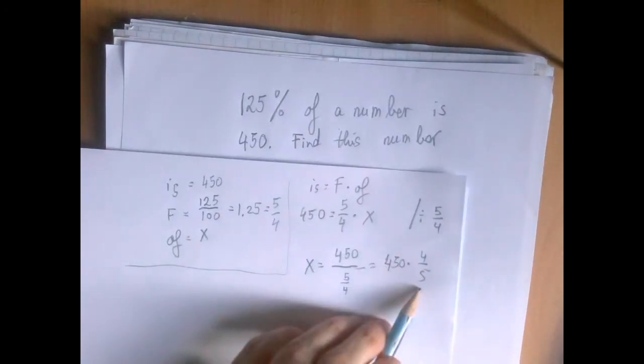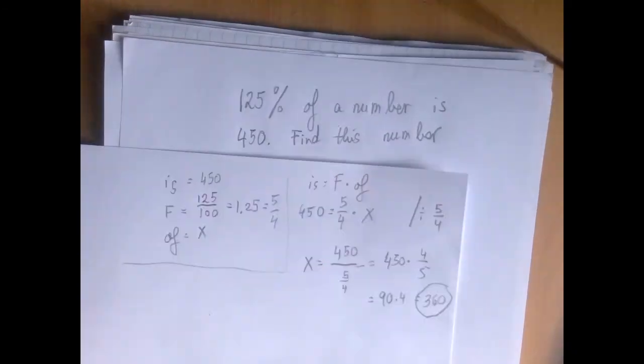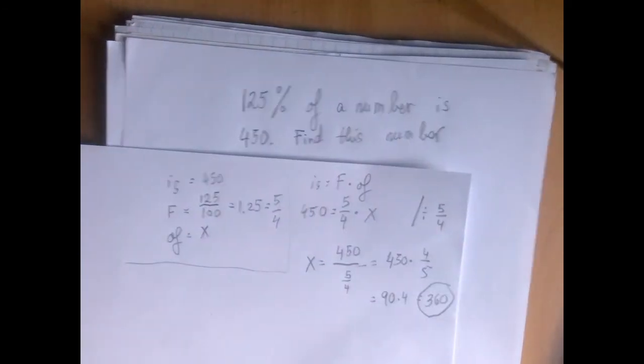See, 45 is 9 times 5. So this is 90 times 4, which is 360. So we think the answer is 360.